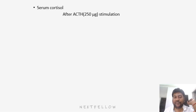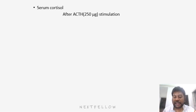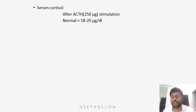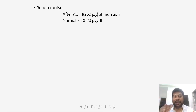To confirm the diagnosis, you can measure serum cortisol level after stimulation by synthetic ACTH. Around 250 micrograms of ACTH is supplemented from outside. After that, serum cortisol level is measured. When you give ACTH from outside, it stimulates the adrenal gland to increase cortisol production. Normally, the cortisol level should be more than 18 to 20 micrograms per deciliter. But if it fails to increase beyond that — if it is less than 18 to 20 — you can confirm the patient is suffering from adrenal insufficiency.